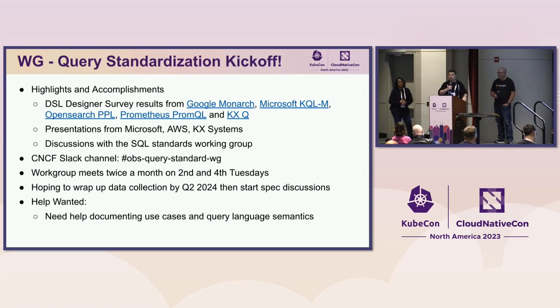We've been working on the working group since KubeCon Europe, with great presentations gathering input from designers of the big DSLs out there. We've had presentations from the Google Monarch team, the Microsoft KQL team, and OpenSearch. We have Prometheus coming up next week, and more from KX Systems as well. We're also working with the SQL Standards Group. We need your help to collect use case stories around observability and more documentation about existing languages. Hopefully by end of Q1 we'll start discussing what we'd recommend as a standard for querying and interacting with observability data. Our meetings are on the opposite Tuesdays of the TAG meeting.